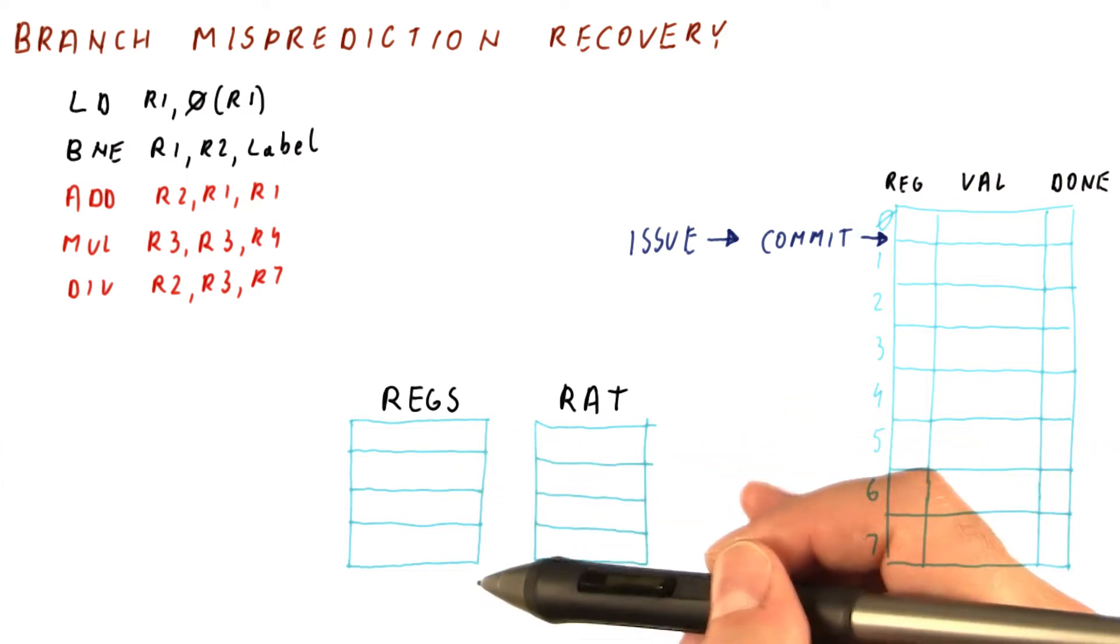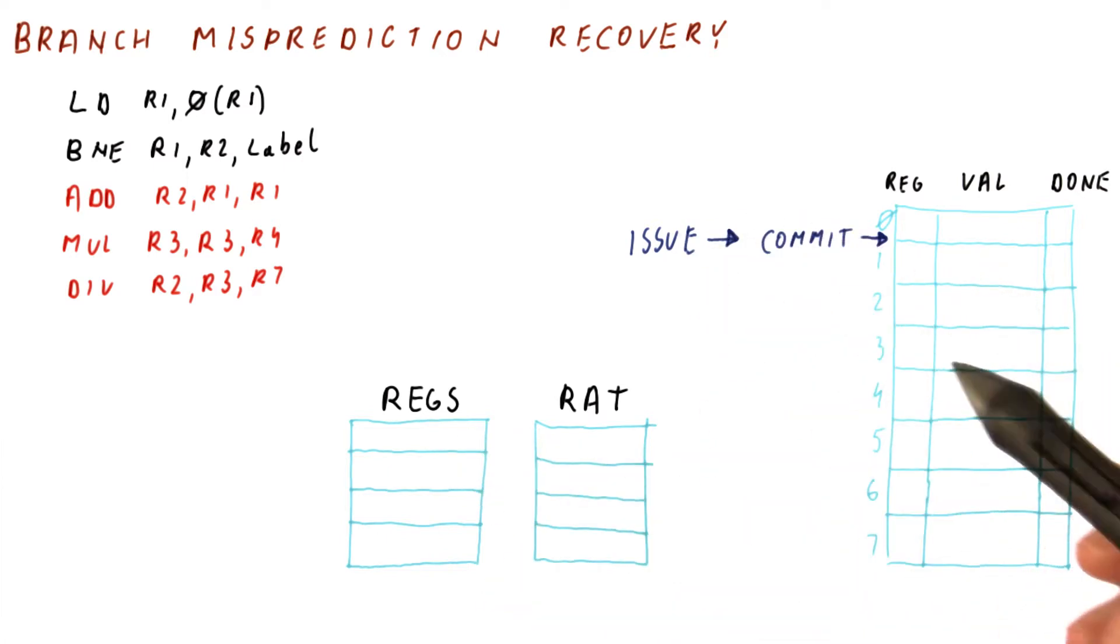So the RAT is just pointing to the registers and the issue and commit pointers in the ROB are the same, meaning that the ROB is empty, all of the entries are free.